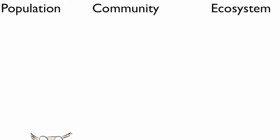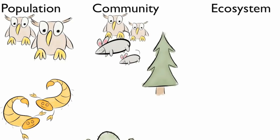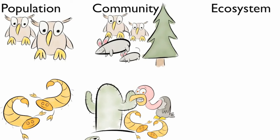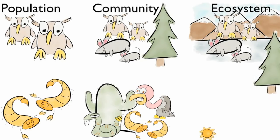Populations are all members of one species. Communities are many populations. Ecosystems include communities and the non-living parts.